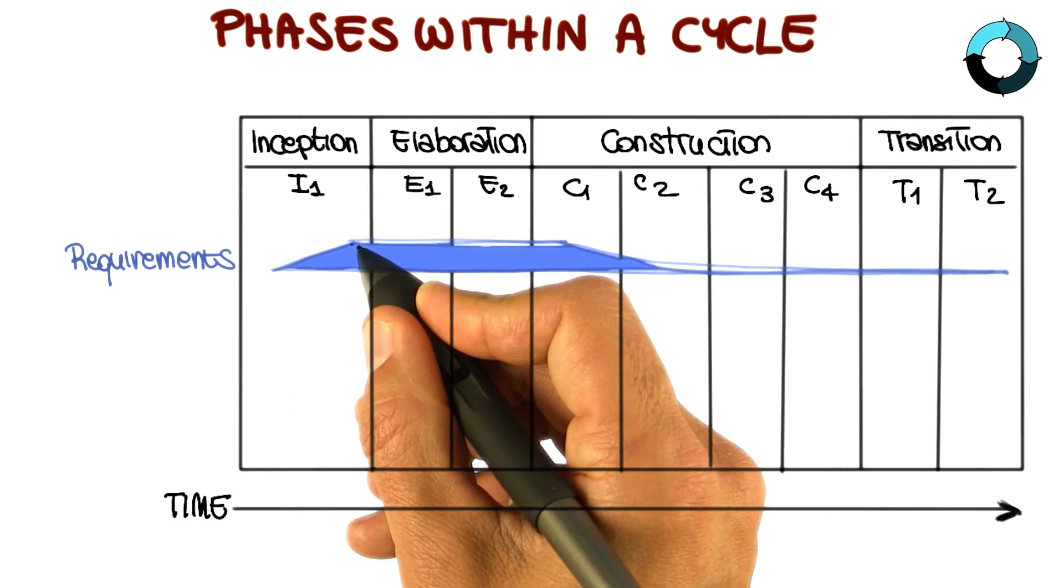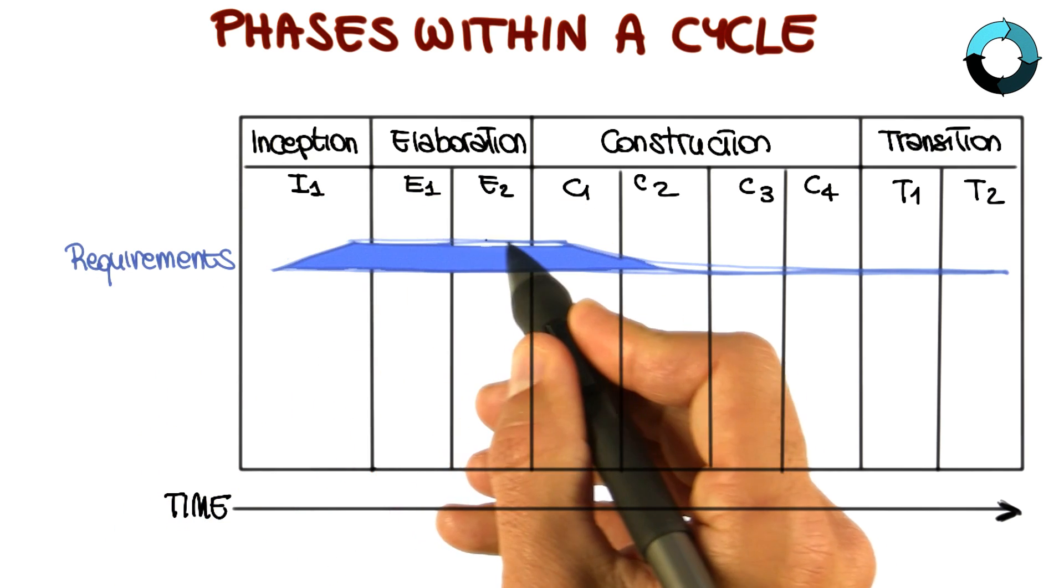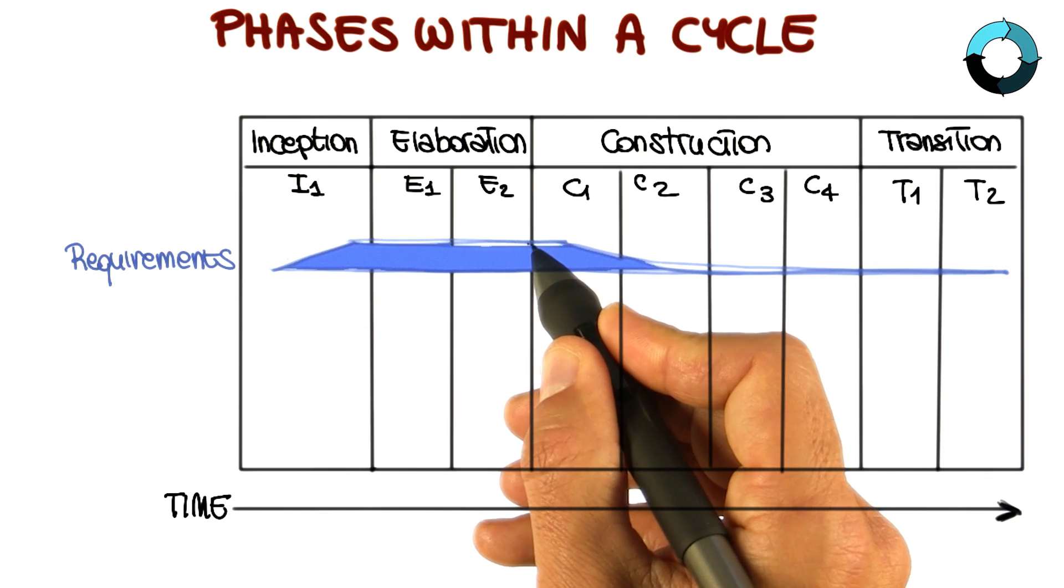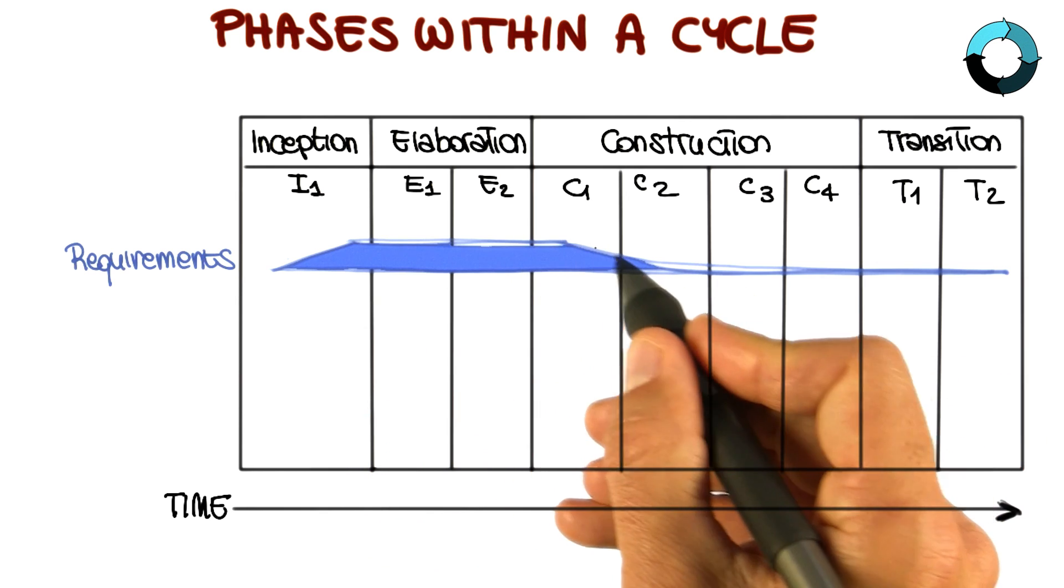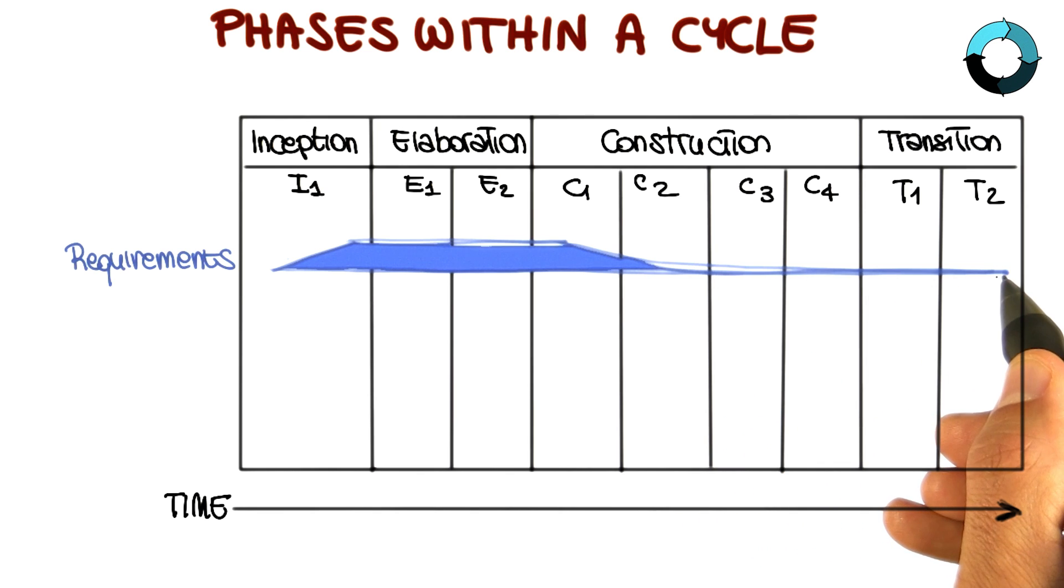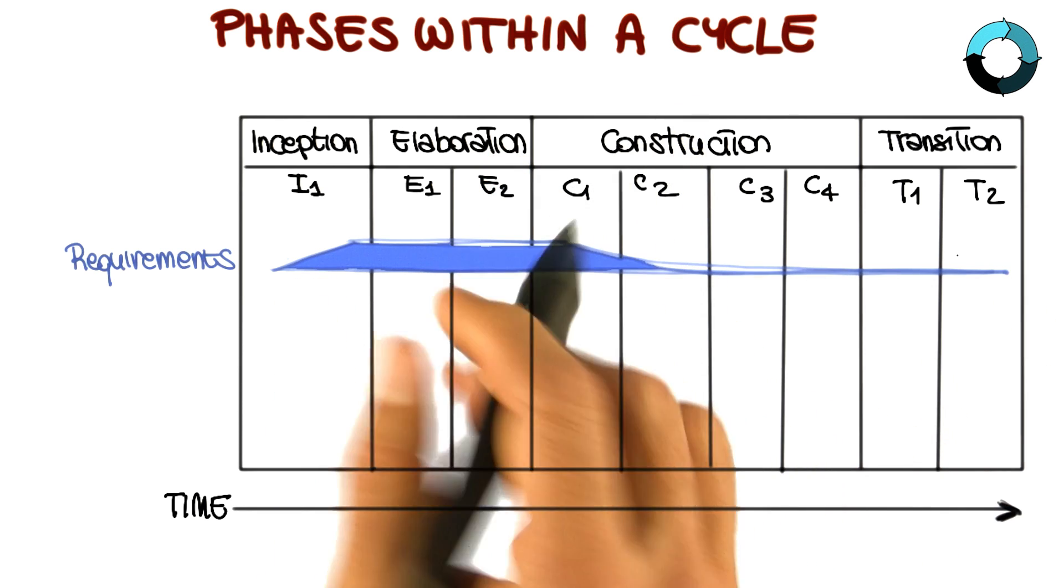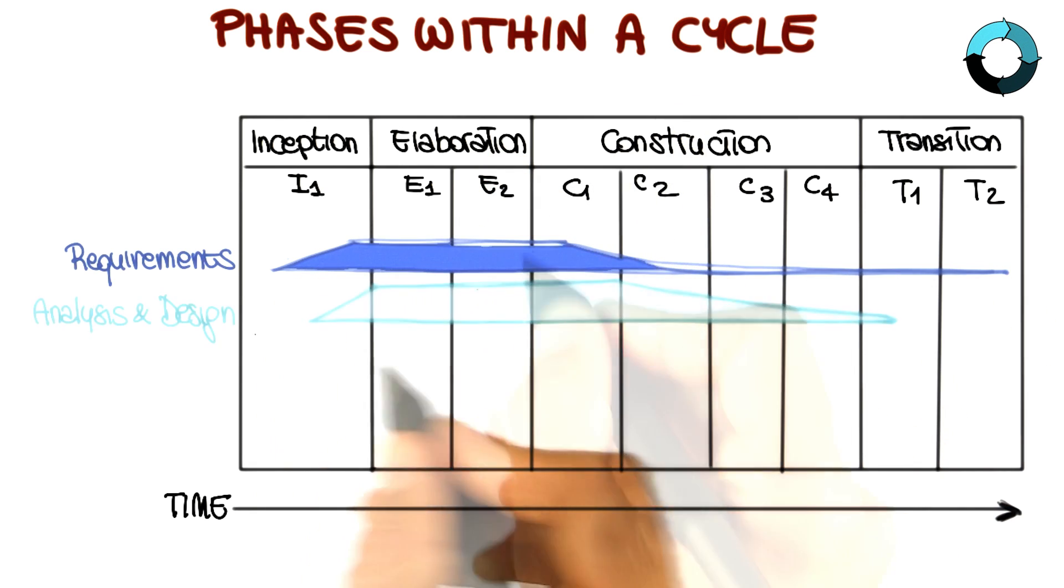So you can see that requirements engineering starts in the inception phase, is mostly performed in the elaboration phase, and then it continues, although to a lesser extent throughout all phases, up until the end of transition. But the bulk is really performed here in the elaboration phase.